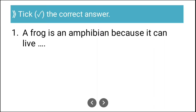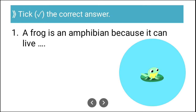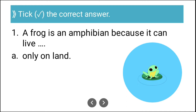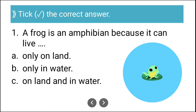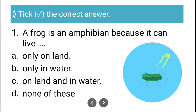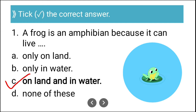Question one: A frog is an amphibian because it can live — options are: only on land, only in water, or on land and in water. The correct answer is C — on land and in water. A frog lives in both land and water, and so it is called an amphibian animal.